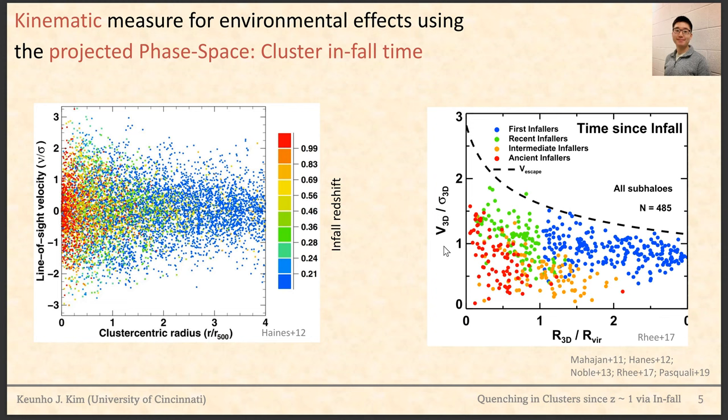This picture is also consistent with another cluster simulation where the ancient, early-infall galaxies are populated mainly in the innermost part of the phase-space diagram, whereas the first-infall and recent-infall populations are distributed at different locations along the larger cluster-centric radius.